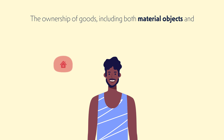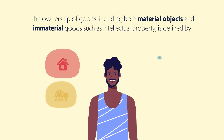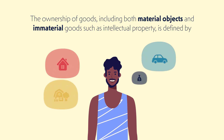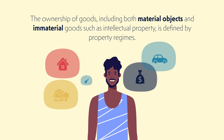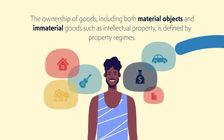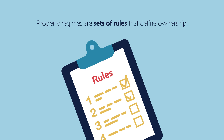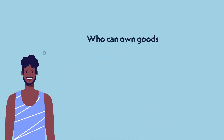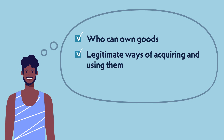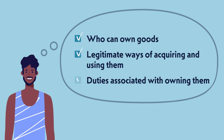The ownership of goods, including both material objects and immaterial goods such as intellectual property, is defined by property regimes. Property regimes are sets of rules that define ownership. They determine who can own goods, legitimate ways of acquiring and using them, and duties associated with owning them.